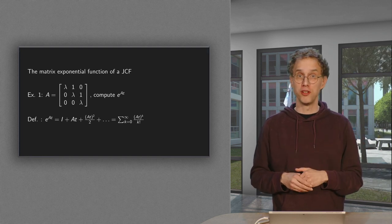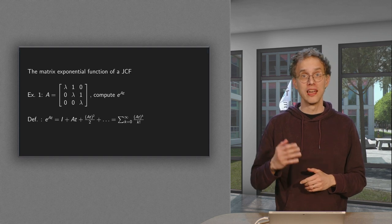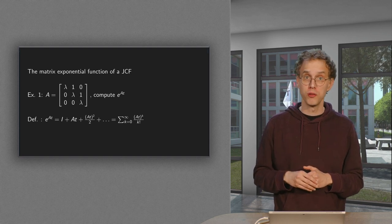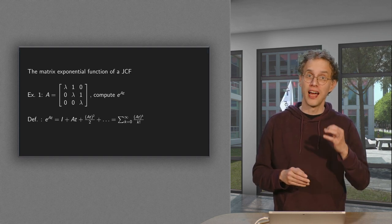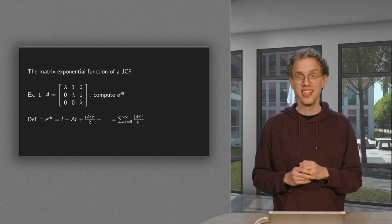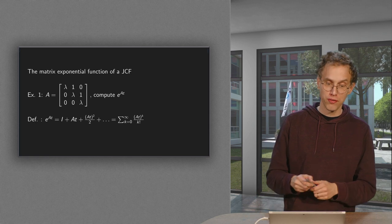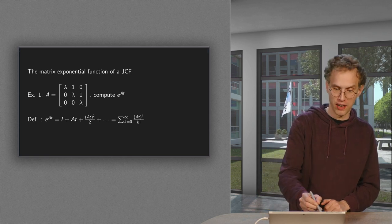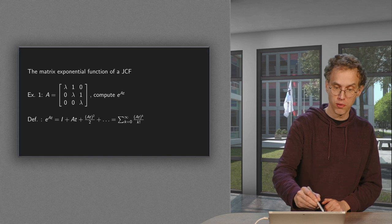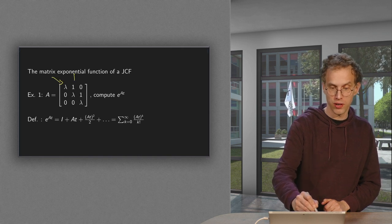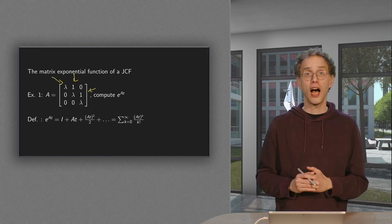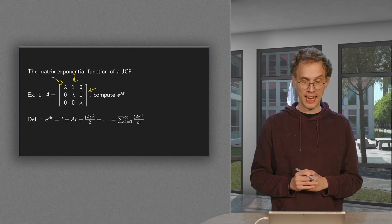But what if we have a Jordan canonical form? In that case, we can also compute the matrix exponential function, and the result is surprisingly easy, as you will see in this video. We'll do it for the specific example here: a 3 by 3 matrix with one Jordan block, lambdas on the diagonal, and the ones over here. And we want to compute e to the power At.